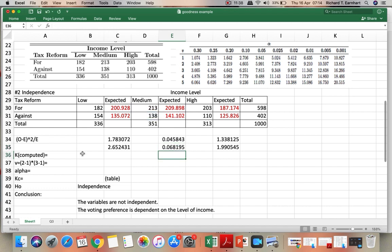For the computed chi-squared, we take the sum, which is 7.87.